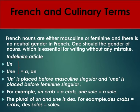The indefinite article: 'un' means 'a' or 'an'. 'Un' is placed before masculine singular nouns and 'une' is placed before feminine singular nouns. For example, 'un crabe' equals a crab, 'une sole' equals a sole. The plural of 'un' and 'une' is 'des'. For example, 'des crabes' equals crabs, 'des soles' equals soles.